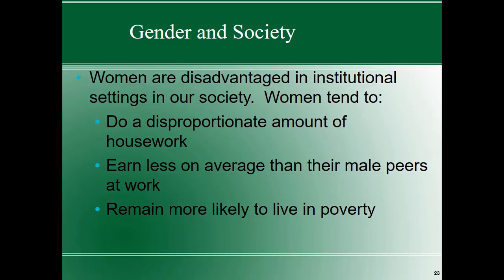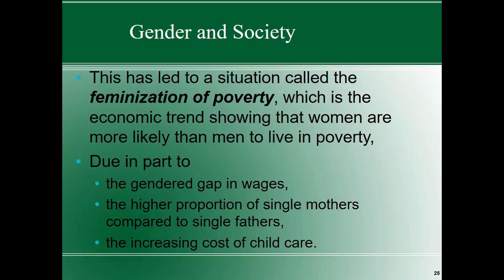Women are disadvantaged in institutional settings in our society. Women do a disproportionate amount of housework and earn less on average than their male peers at work. The common saying has been women earn 75 cents to the dollar a man makes; in the modern era it's probably more like 80 cents, but women do still earn less than men. Women are also more likely to live in poverty — partly because when family units break down, men are more likely to leave and women are more likely to stay with the children, negatively impacting finances. This has led to what's called the feminization of poverty.